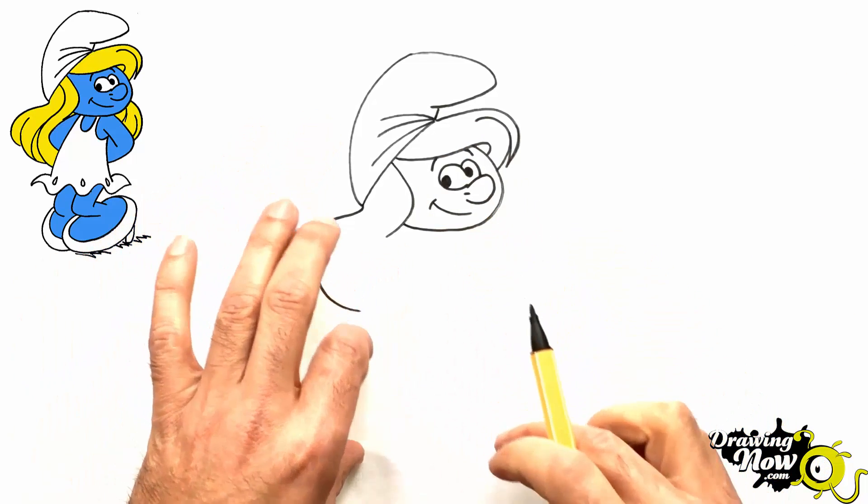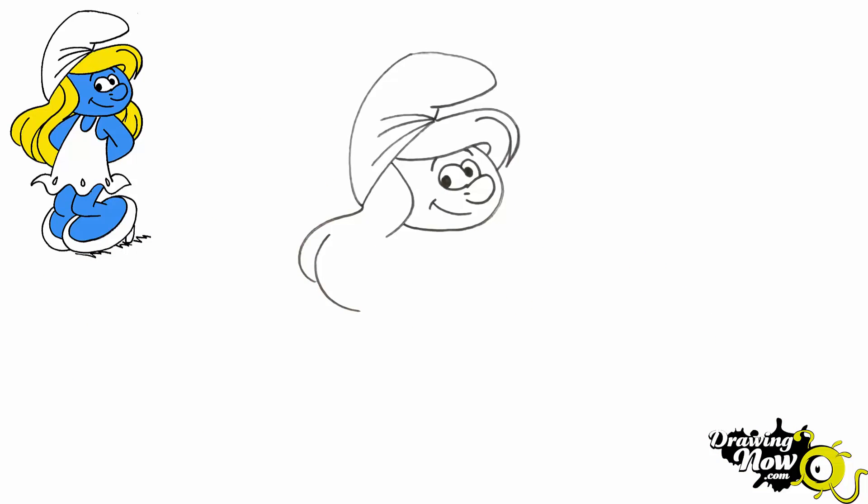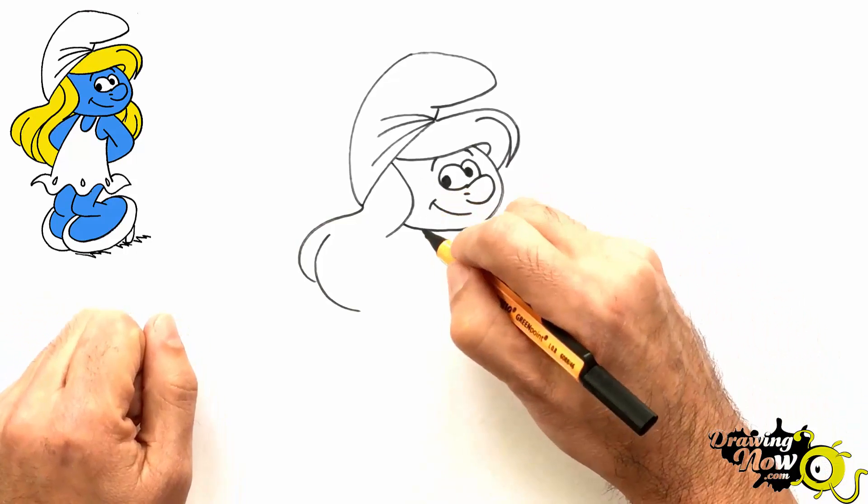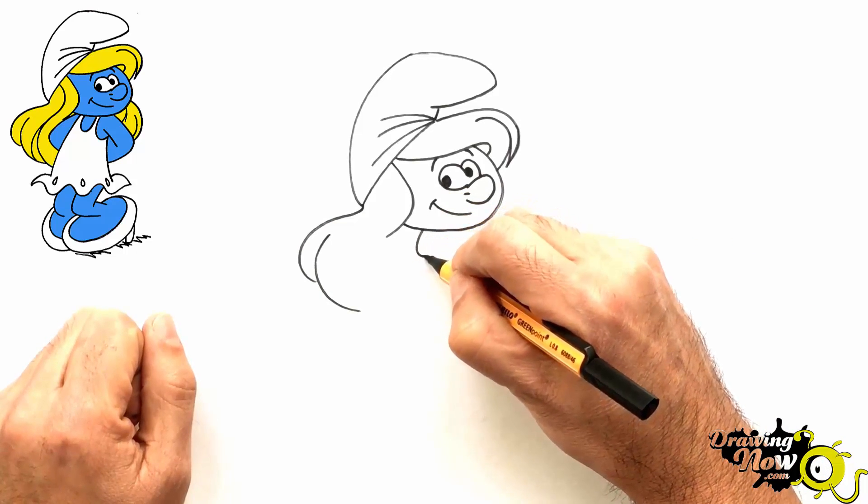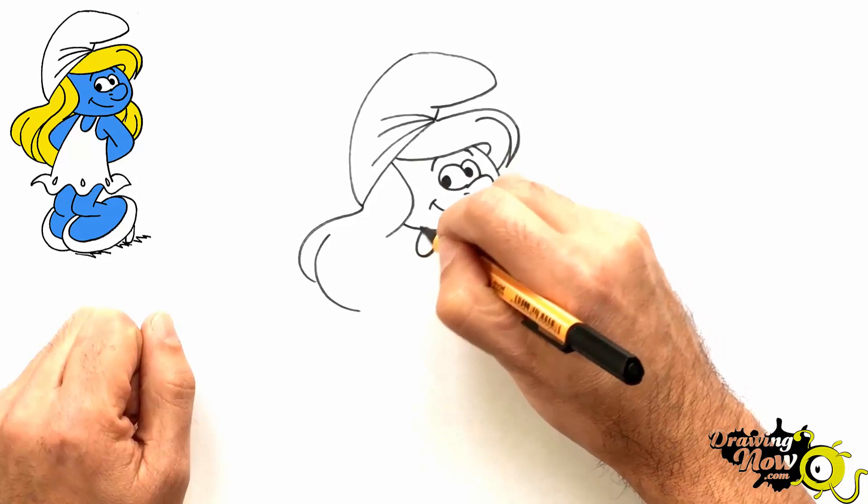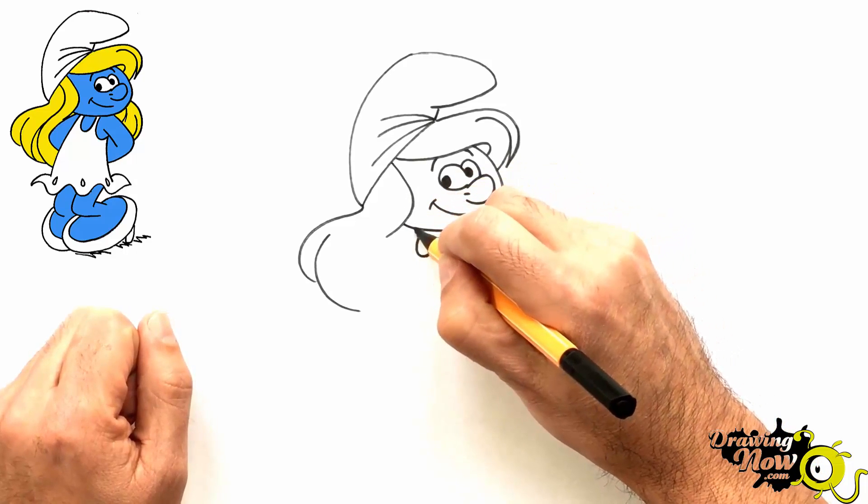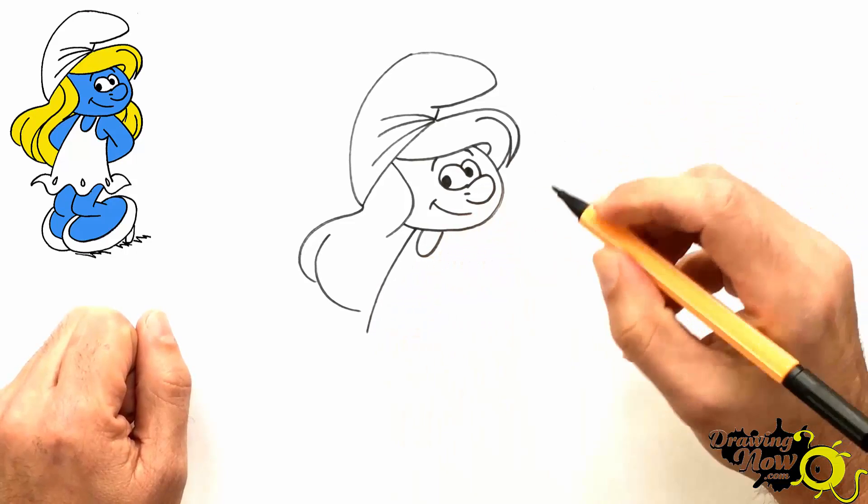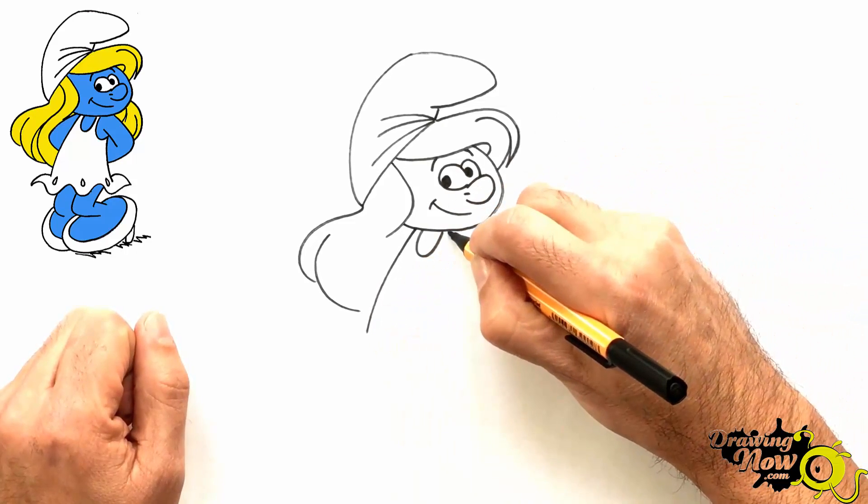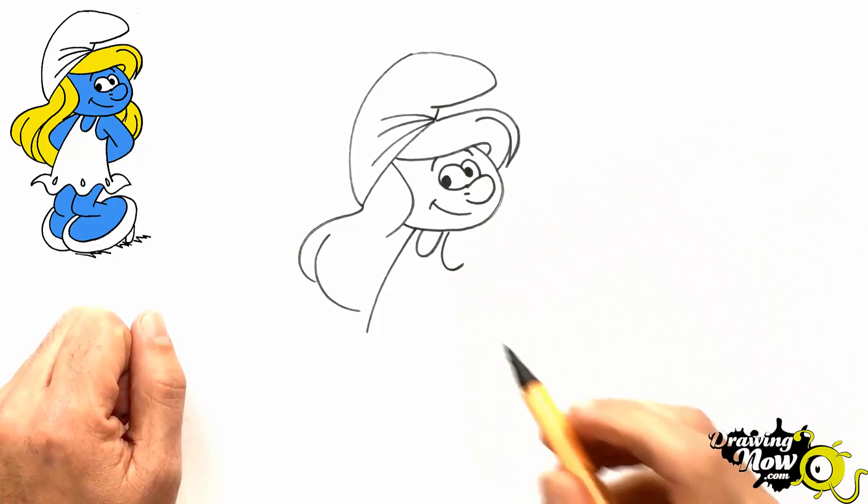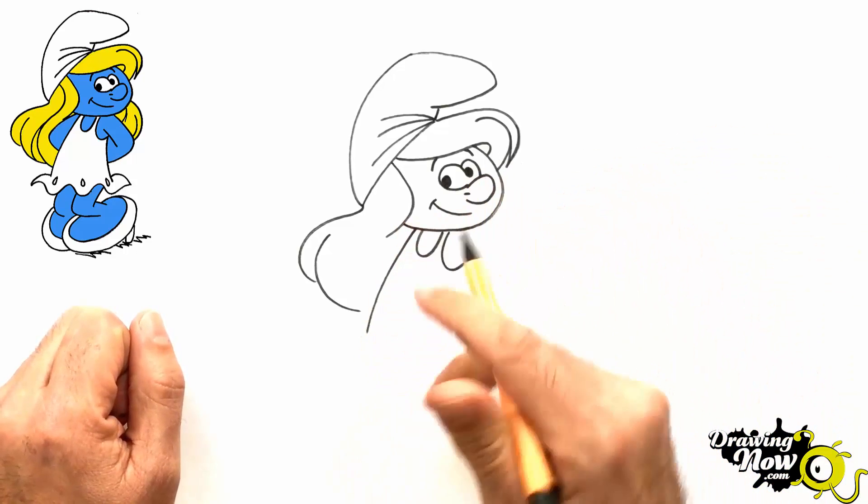And now we continue with the body. So now we do the top, the neck. Just here. So now we see the cleavage. So now we do a line that goes like down here. Now we do another line that does that. So this is the body.